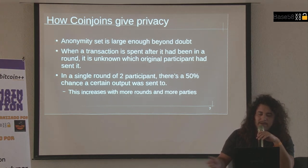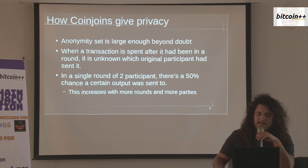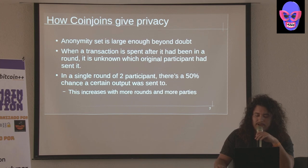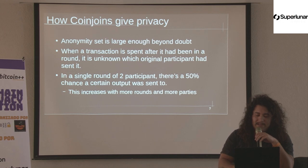So how do CoinJoins achieve privacy? It all comes down to anonymity set — you want to be able to hide amongst the crowd. If you're just doing a pay join with just two people, there's a 50-50% chance that a certain output belongs to one of the parties. But you want that to be even lower. As you do more rounds and add more participants, you get more of an anonymity set, so there's a smaller and smaller chance that a spent output was actually you.